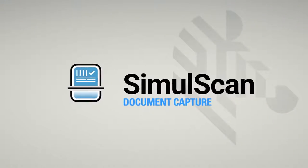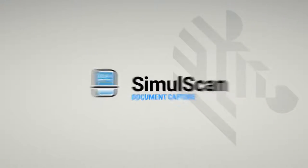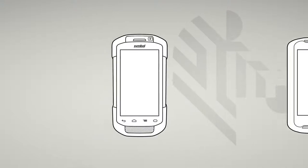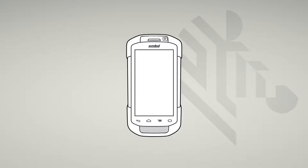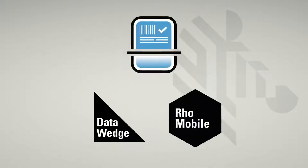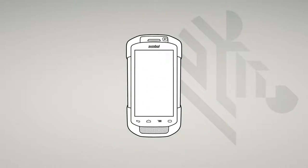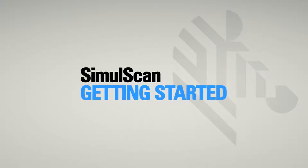SimulScan Document Capture. SimulScan enables you to extract critical information from documents by processing them in real time. It is part of a powerful suite of enterprise-grade tools embedded into your organization's software. This tutorial demonstrates key features of the SimulScan software to help capture and process documents effectively and validate the results thereafter for maximum accuracy. Let's get started.